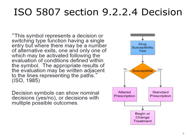The decision or diamond symbol represents a decision or switching function having a single entry but where there may be a number of alternative exits, one and only one of which may be activated following evaluation of conditions defined within the symbol (ISO 1985). Decision symbols can show nominal yes/no decisions or decisions with multiple possible outcomes. In this example, the patient is given a drug susceptibility test and a decision is made about the appropriate type of prescription based on test results, with different actions for susceptible versus non-susceptible patients.